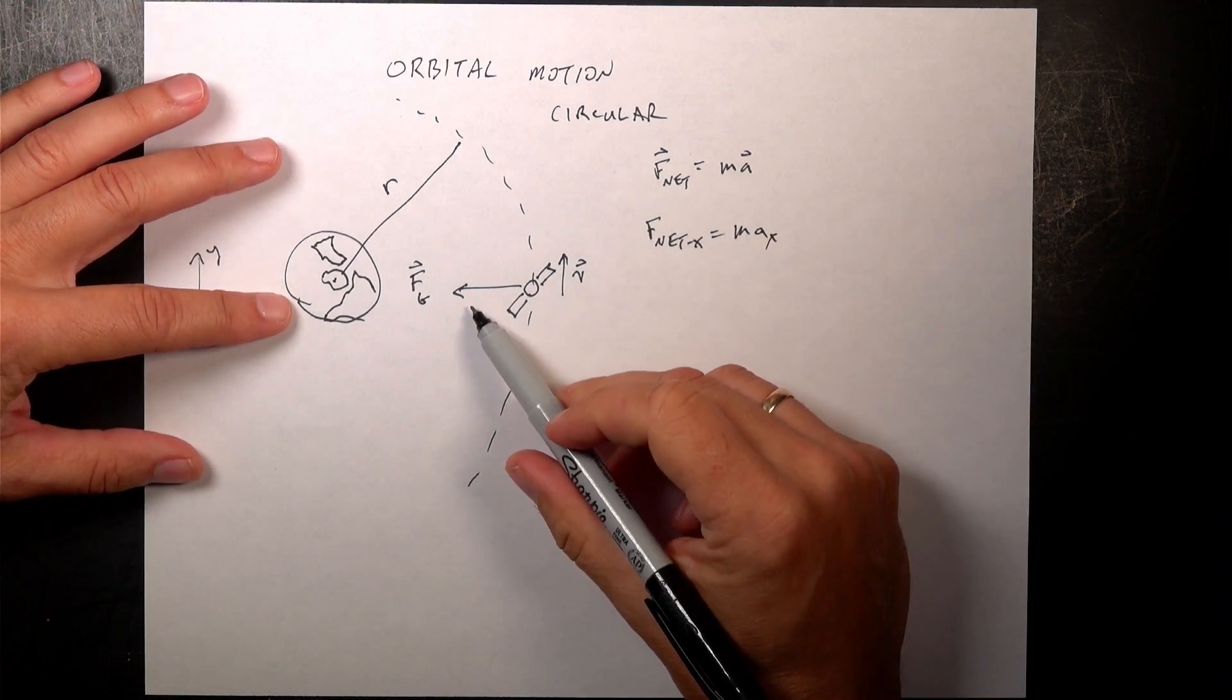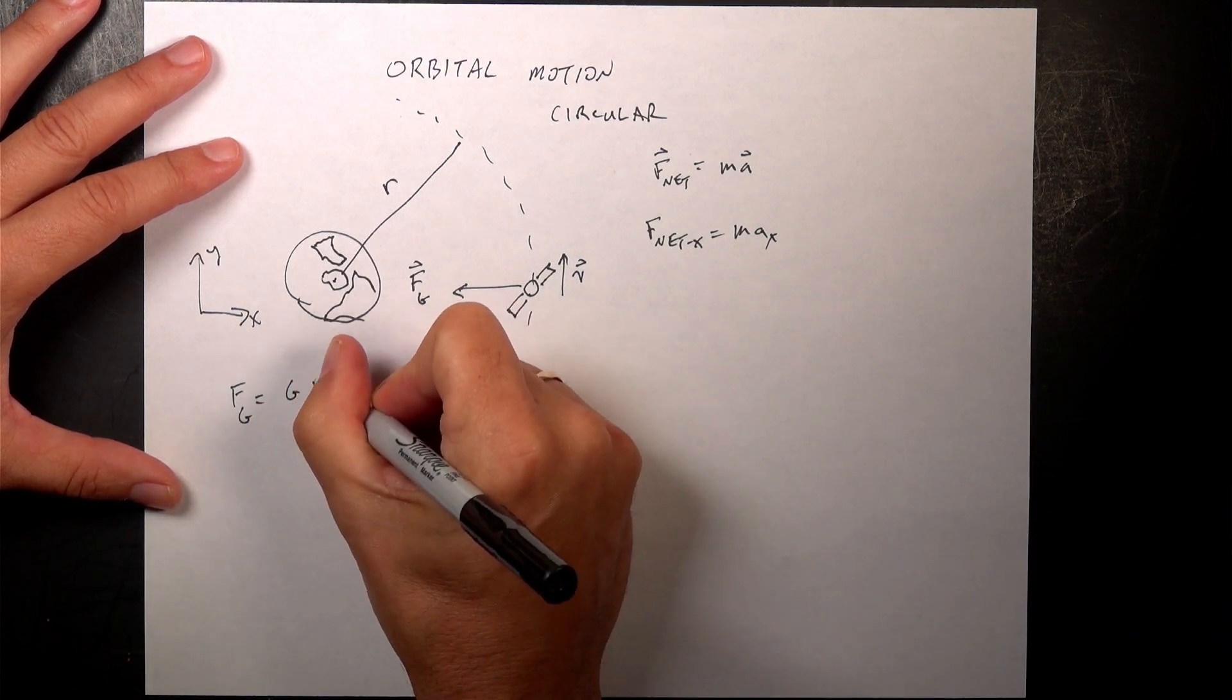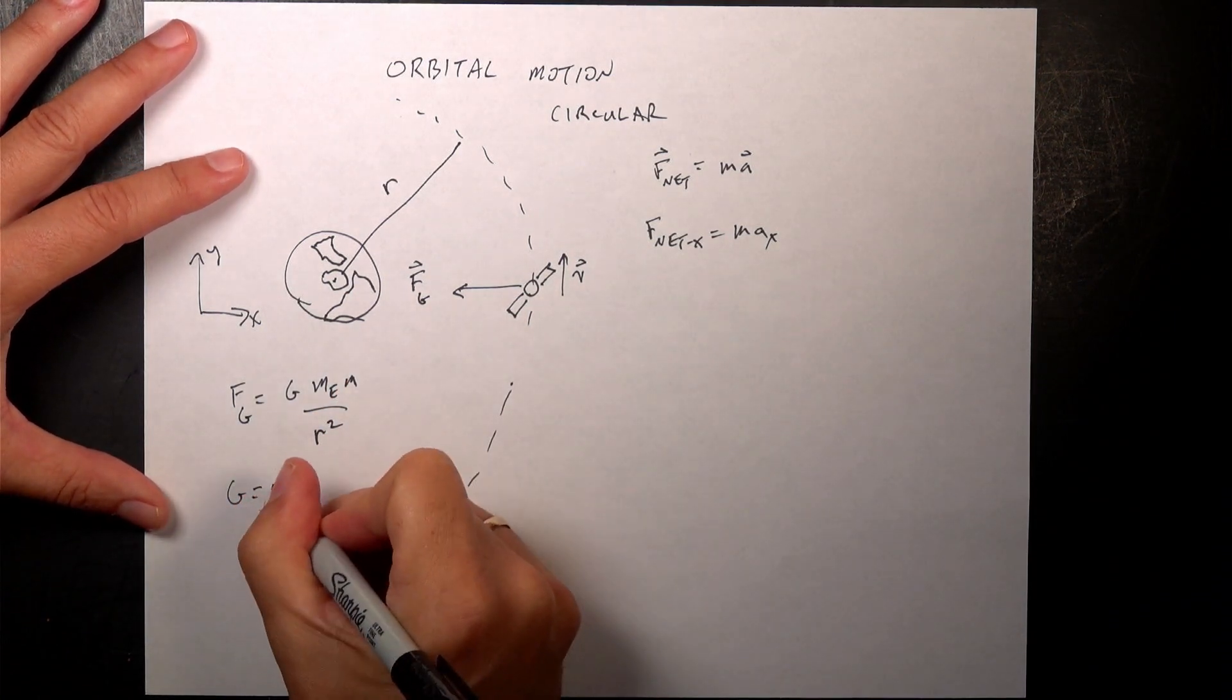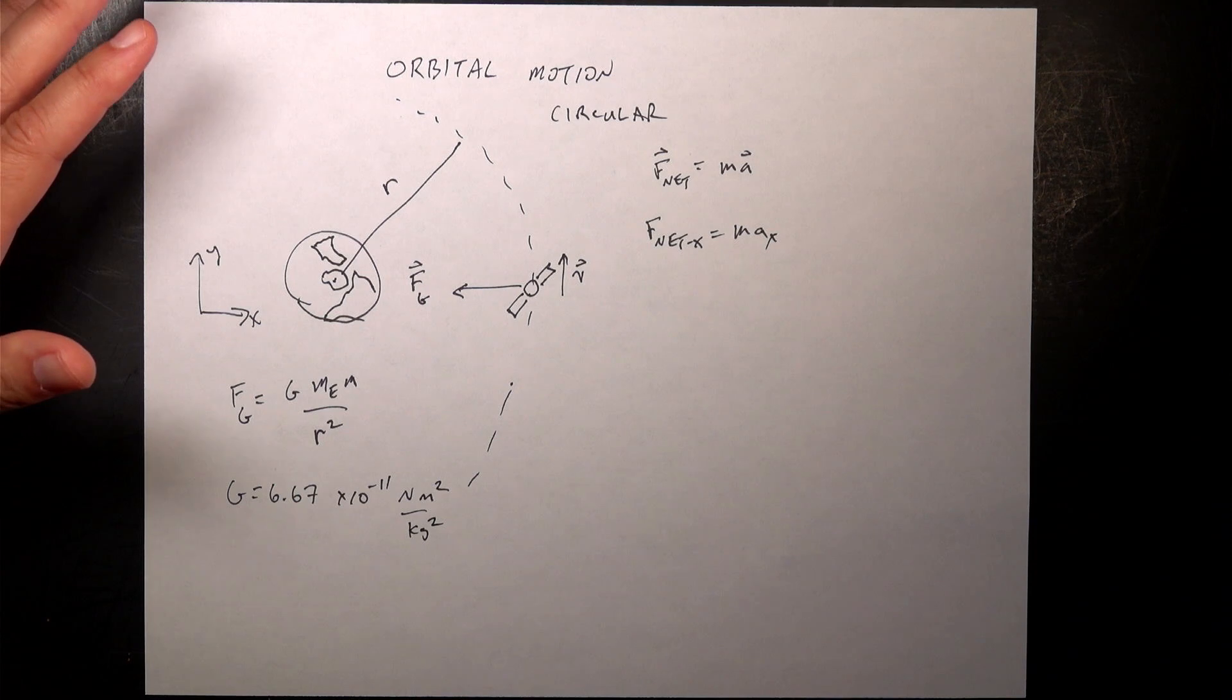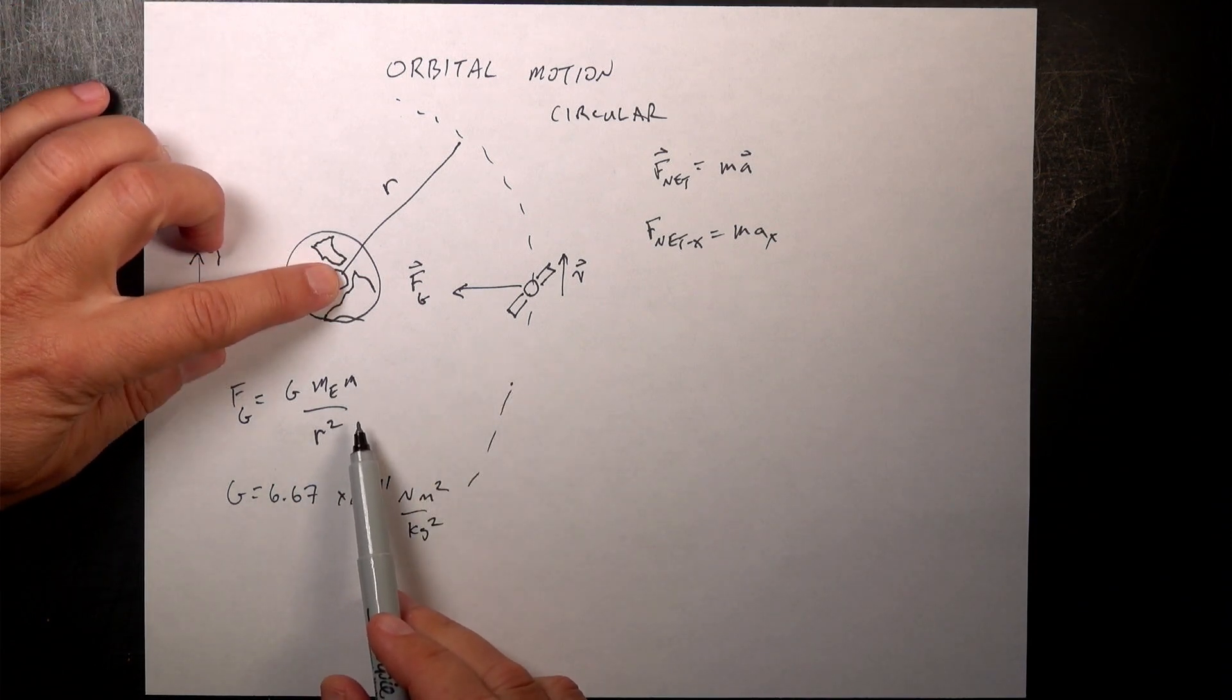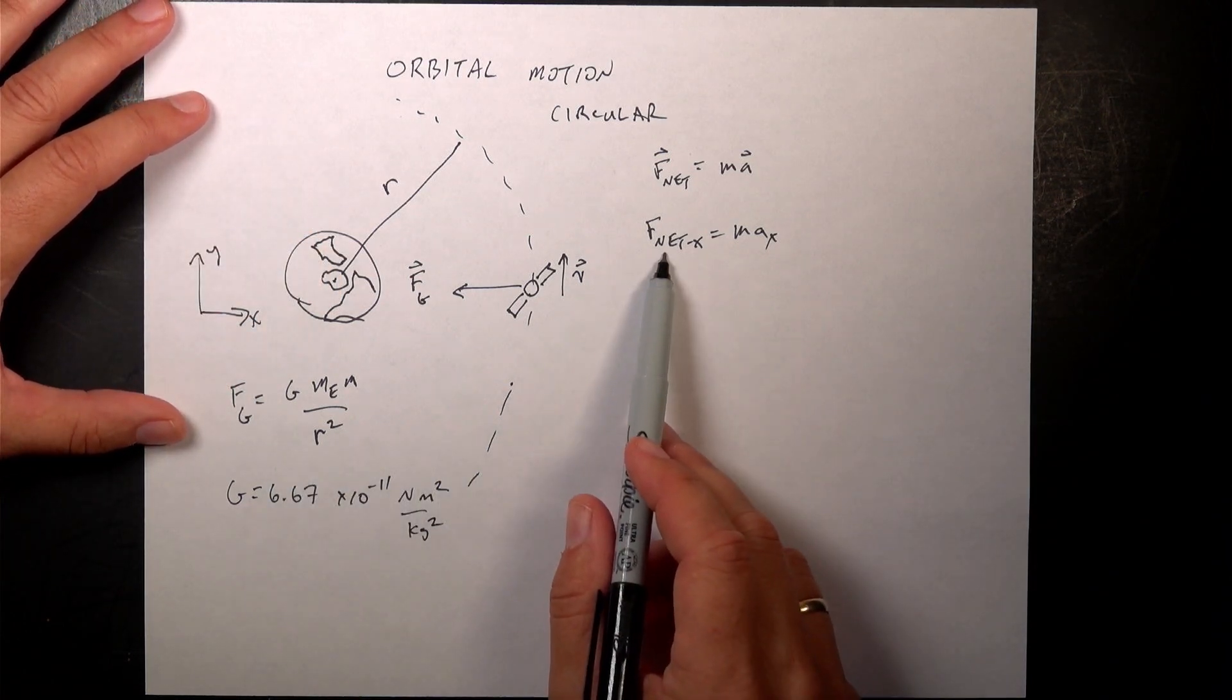And so that net force is going to be the gravitational force. Remember, in general, the magnitude of the gravitational force is GMₑM over R squared. So G is the constant. G is 6.67 times 10 to the negative 11th newton meters squared per kilogram squared. Mₑ is the mass of the planet. M is the mass of the spacecraft. And R is the radius of the circular orbit. So that's the only force in the negative x direction.